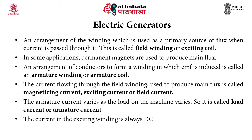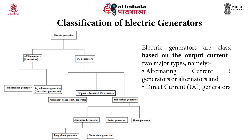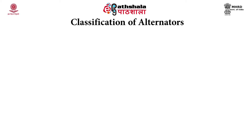The current in the exciting winding is always DC current. The classification of electric generators is based on the type of output current, divided into two groups: alternating current generators or alternators, and direct current generators. As shown in the flow diagram, electric generators are classified into AC generators and DC generators. AC generators are further divided into synchronous generators and asynchronous generators.